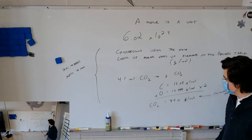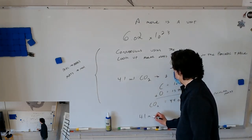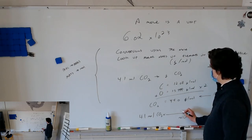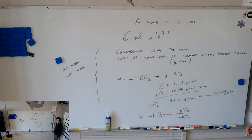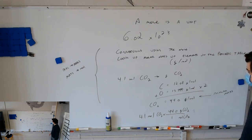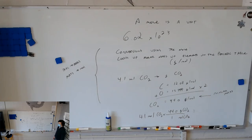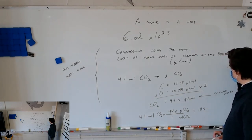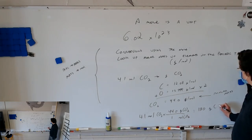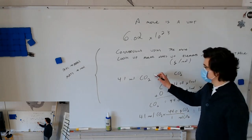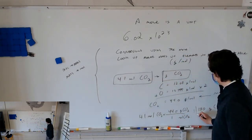Now that I have the molar mass of CO₂, I do my conversion: 4.1 moles of CO₂, with moles of CO₂ on the bottom and grams of CO₂ on top. There are 44.0 grams in one mole of CO₂. 4.1 times 44 equals 180 grams of CO₂. We were given moles and went to grams, so our answer is in grams. We can now do six things: moles to particles and particles to moles; grams to moles and moles to grams of elements; and grams to moles and moles to grams of compounds.